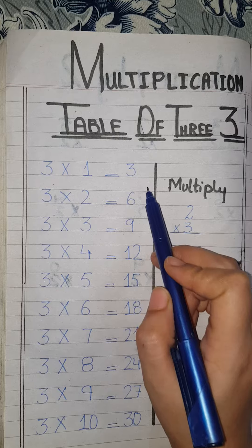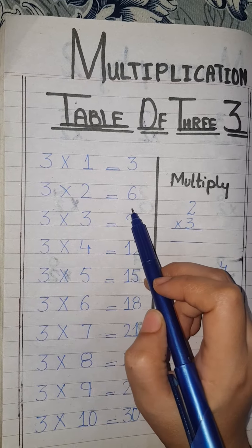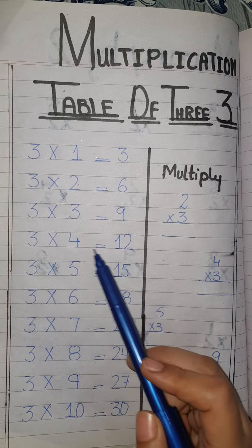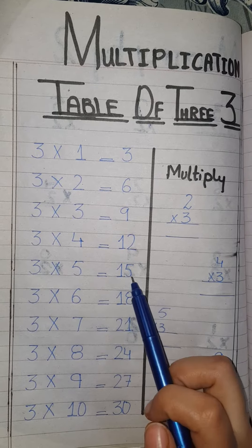3 times 1 is 3, 3 times 2 is 6, 3 times 3 is 9, 3 times 4 is 12, 3 times 5 is 15.